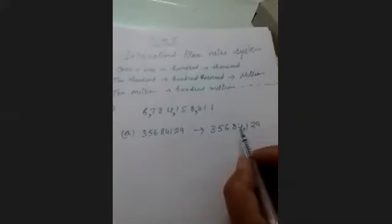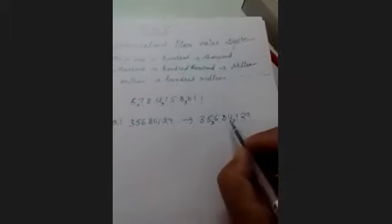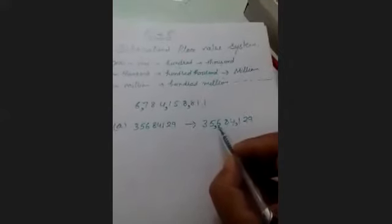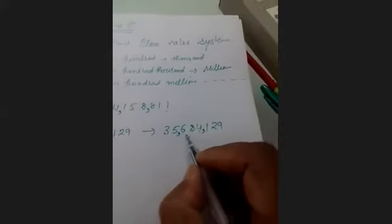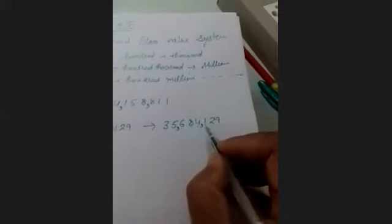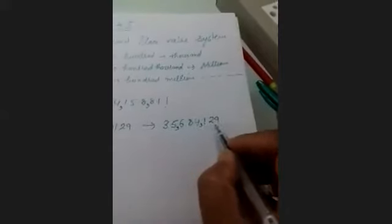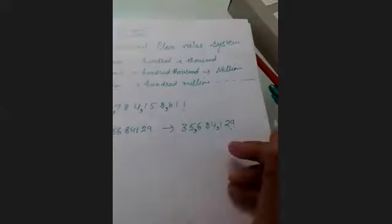Put the second comma after three digits. Count place values: 1, 10, 100, 1000, 10,000, 100,000, then million, 10 million. So this number is 35,684,129. Clear students.